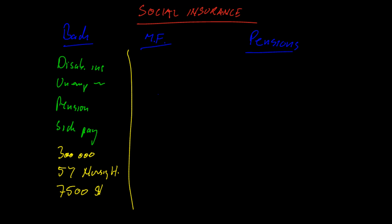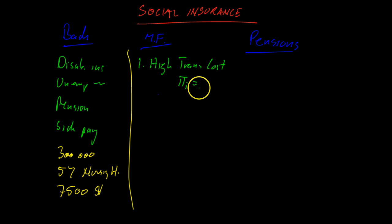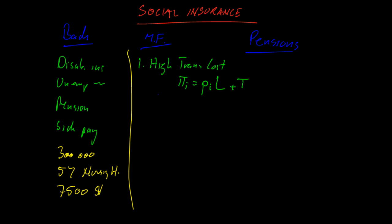Let's discuss some of the market failures. First, some people say there are high transaction costs in some of these markets. In an insurance market, the price of insurance for a certain person I depends on the probability that the insurance company will have to pay out a certain amount L — the loss — plus the transaction cost of determining whether they want you as a customer. They have to collect and process information. These transaction costs can be quite high — maybe 20% to 50% for some kinds of insurance.